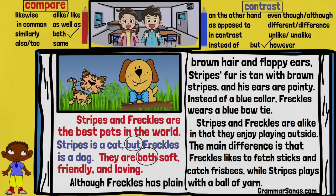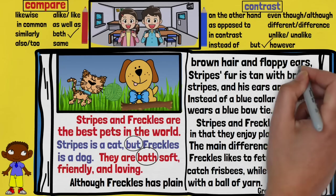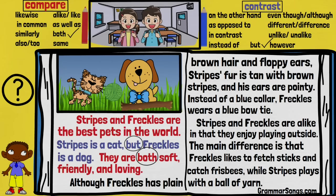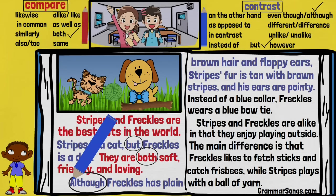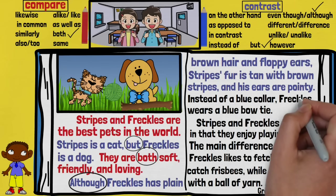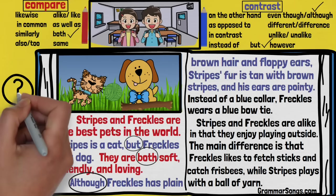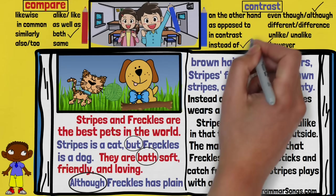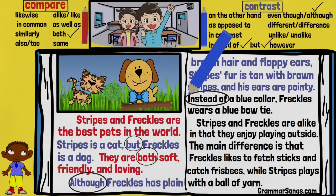'Although Freckles has plain brown hair and floppy ears, Stripes' fur is tan with brown stripes and his ears are pointy.' This is a contrast — I see the signal word 'although.' Freckles has brown hair and floppy ears, while Stripes has striped fur and pointy ears. 'Instead of a blue collar, Freckles wears a blue bow tie.' This sentence contrasts — 'instead of' signals how they are different. Stripes wears a blue collar, but Freckles wears a blue bow tie instead.